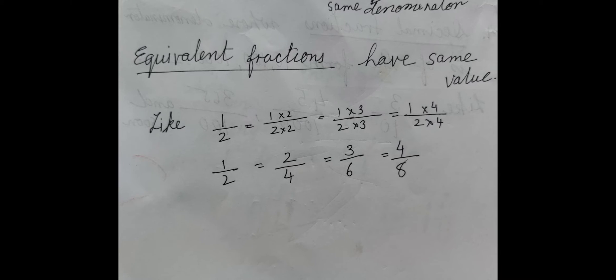Then the next kind of fraction is equivalent fraction, which have the same value. That means if you bring it to the lowest term, you will get simplest form like one upon two. So you can see I have made equivalent fractions by multiplying numerator and denominator by first two, then three, then four. And we are getting one upon two equals two upon four equals three upon six equals four upon eight. If you bring all these - two upon four, three upon six, four upon eight - to lowest term, you will again come back to one upon two. So such kind of fractions are called equivalent fractions.